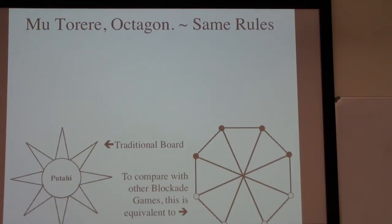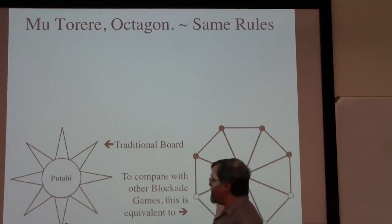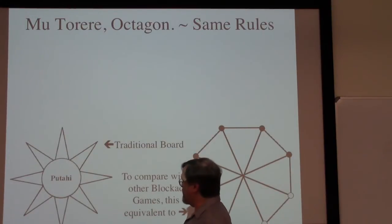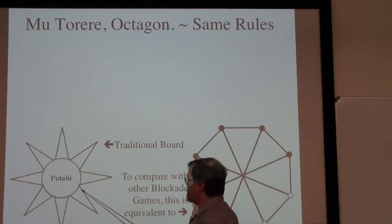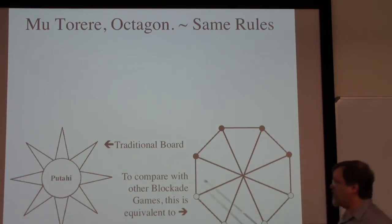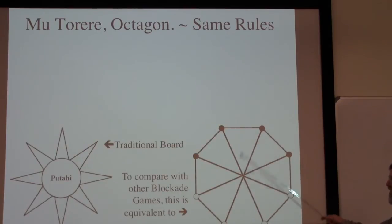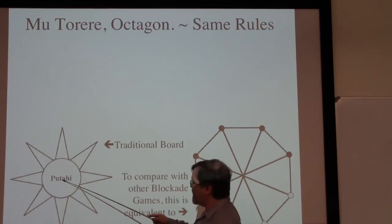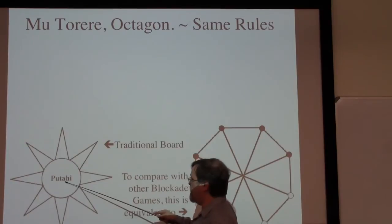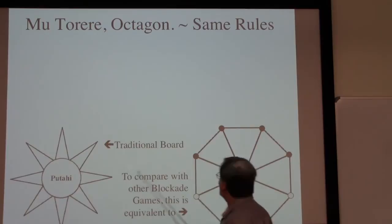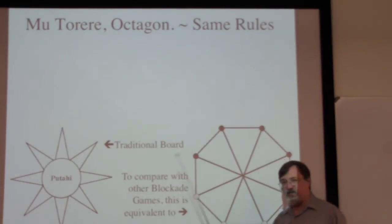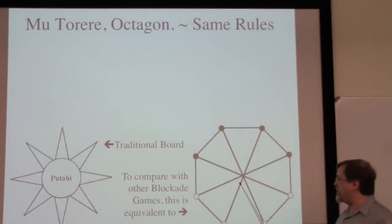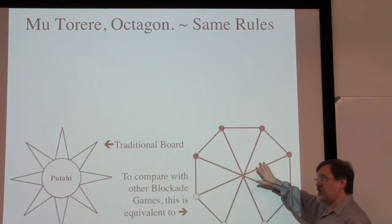The traditional board for Mutore is played with an eight-sided star. The version I have from the museum in Christchurch, New Zealand, instead of having star points has an octopus with eight legs coming out. To make it more directly comparable to the games we've been playing I'm going to put this on an octagon with lines crossing. The rule for Mutore is you can always move from the Putahi out to one of the points, from a point into the Putahi, or from a point around the outside to one of the other points next to it — which is exactly the same as this octagonal representation.